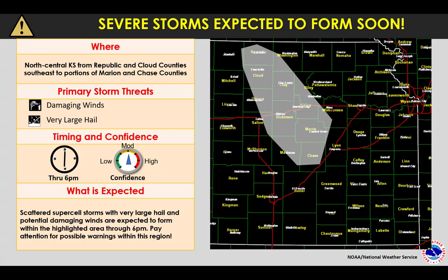Here I'm showing similar information through a social media graphic focused on the what, where, and when, highlighting my confidence level as well, which is up to moderate given cap erosion and building cumulus starting to appear. My focus area is the eastern part of north central Kansas, mainly east of Concordia and Salina. This can be done in a simple and efficient PowerPoint template in which I just fill in the information I want to communicate. There are different ways this template can be set up.